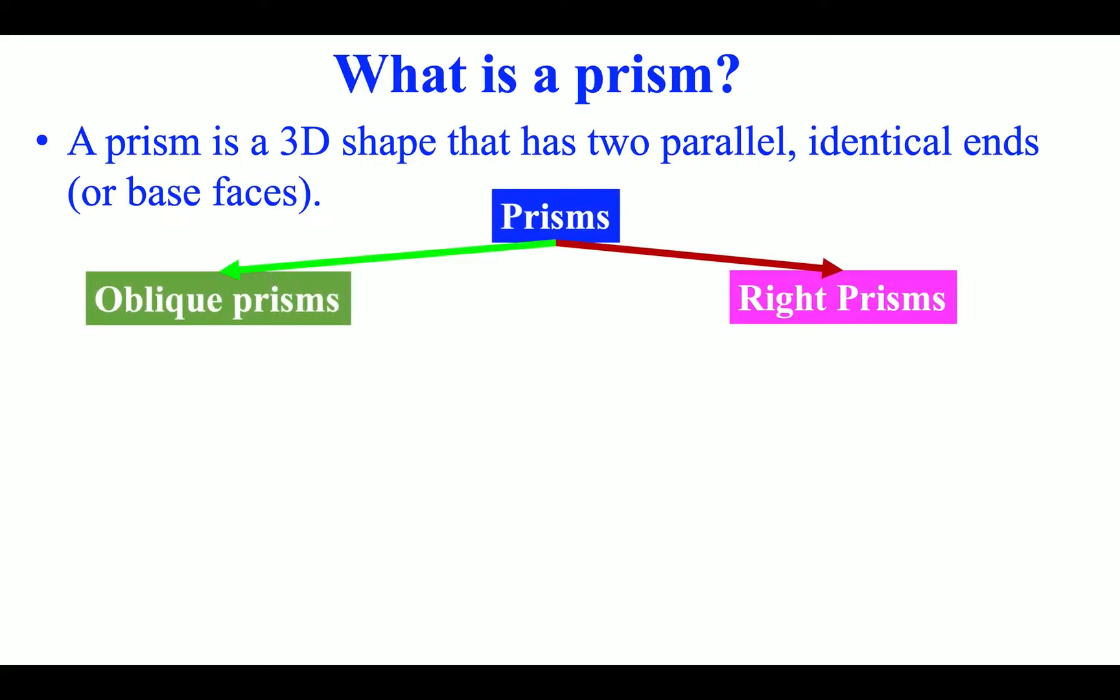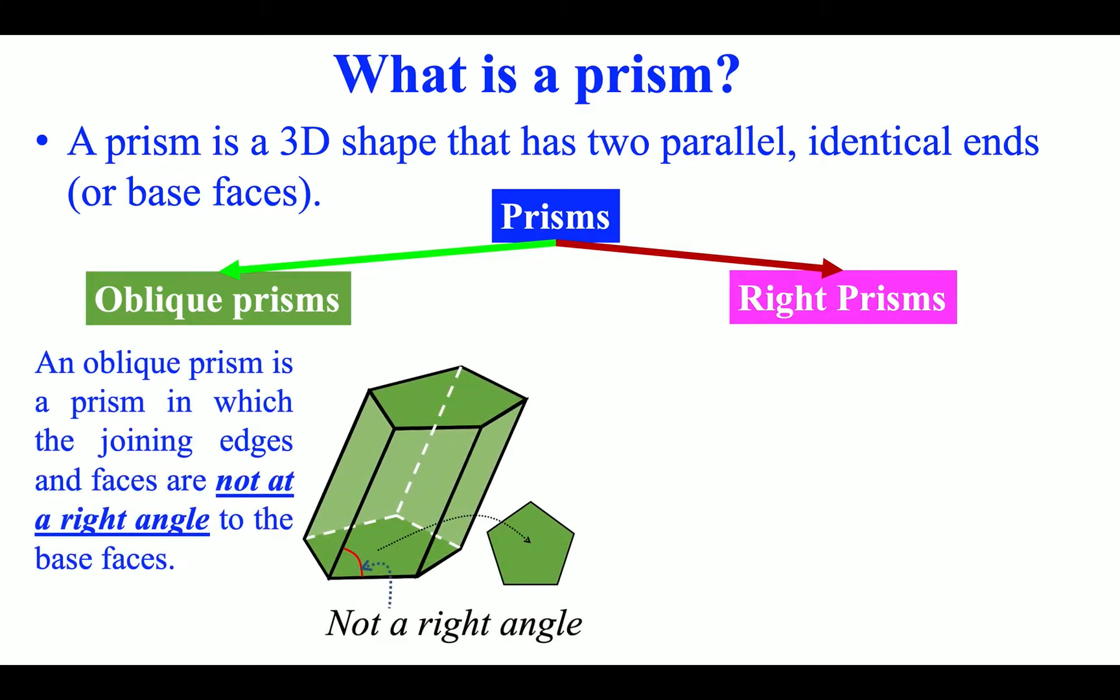Prisms can be classified as either oblique prisms or right prisms. An oblique prism is a prism in which the joining edges and faces are not at a right angle to the base faces.